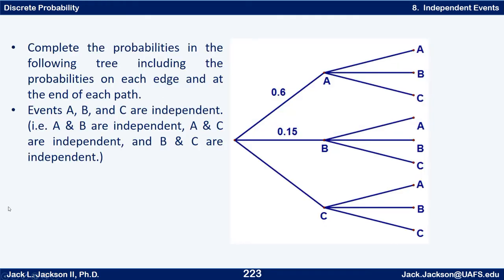If we assume that A, B, and C are all three independent events — meaning A and B are independent, B and C are independent, and A and C are independent — can we fill out the rest of this tree? Press pause and come back when you're done.